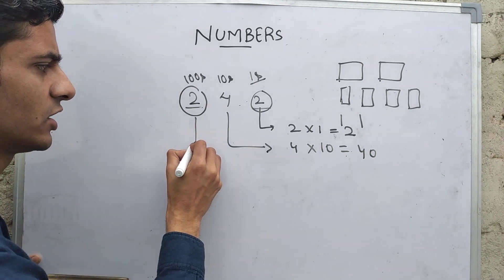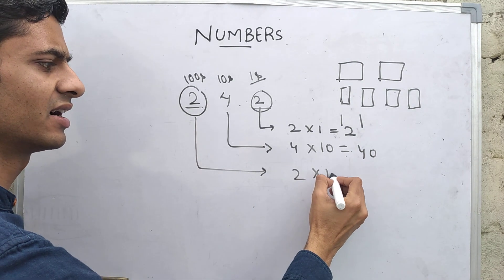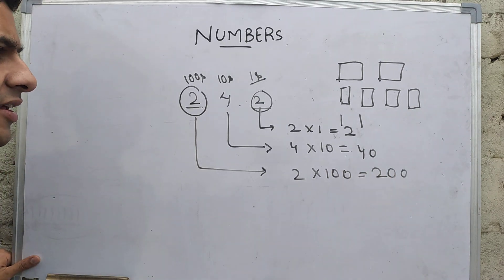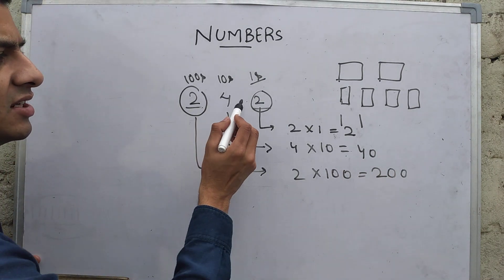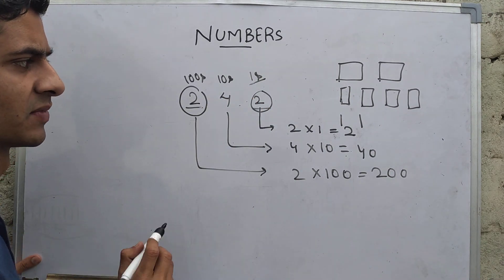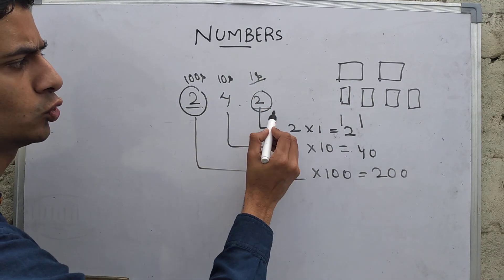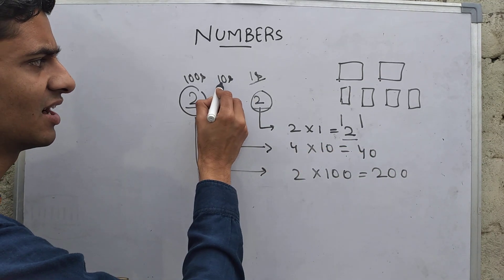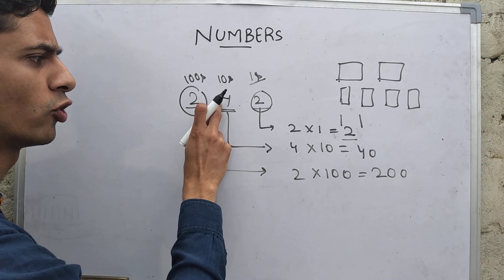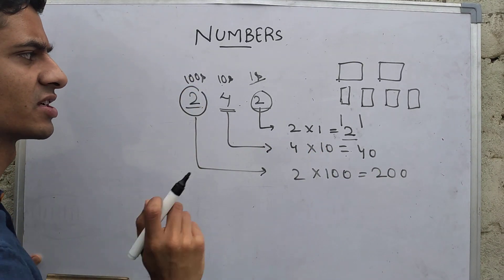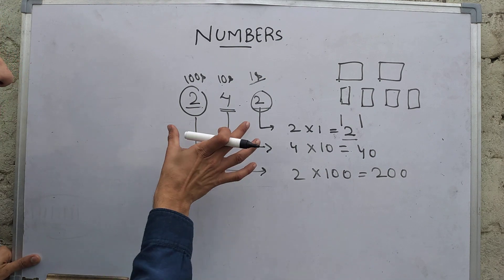And two hundreds, it represents 200. You can even imagine that, okay, this is a one rupee note. How many one rupee notes? Two. So this is what it represents. This four being here represents a 10 rupee note. I am having four 10 rupee notes, it is 40. Two hundred rupee notes, it goes to 200.